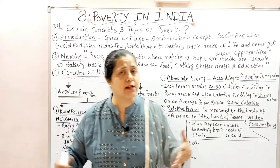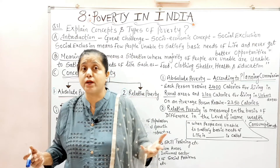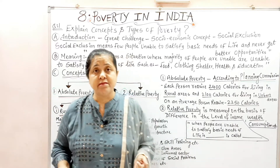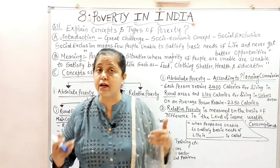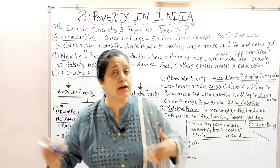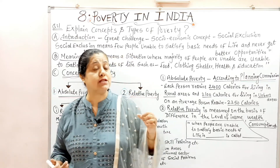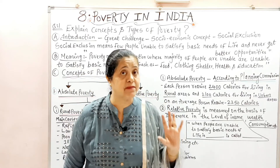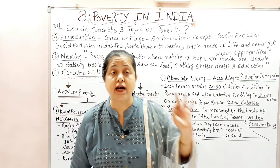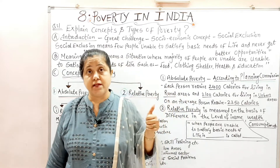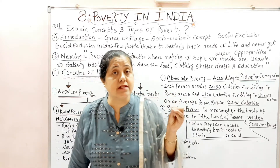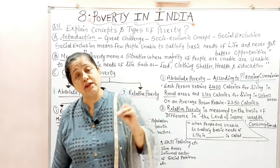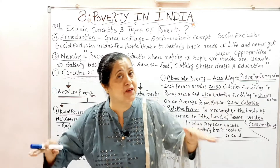Earlier we used to say that our basic needs are three — food, clothing, and shelter — roti, kapda aur makan. But gradually as the economy developed, and our economy integrated with the global economy, we found that basic needs are not three but five: food, clothing, shelter, health, and education. If we cannot earn enough income to satisfy these five basic necessities, then we lie below the poverty line.